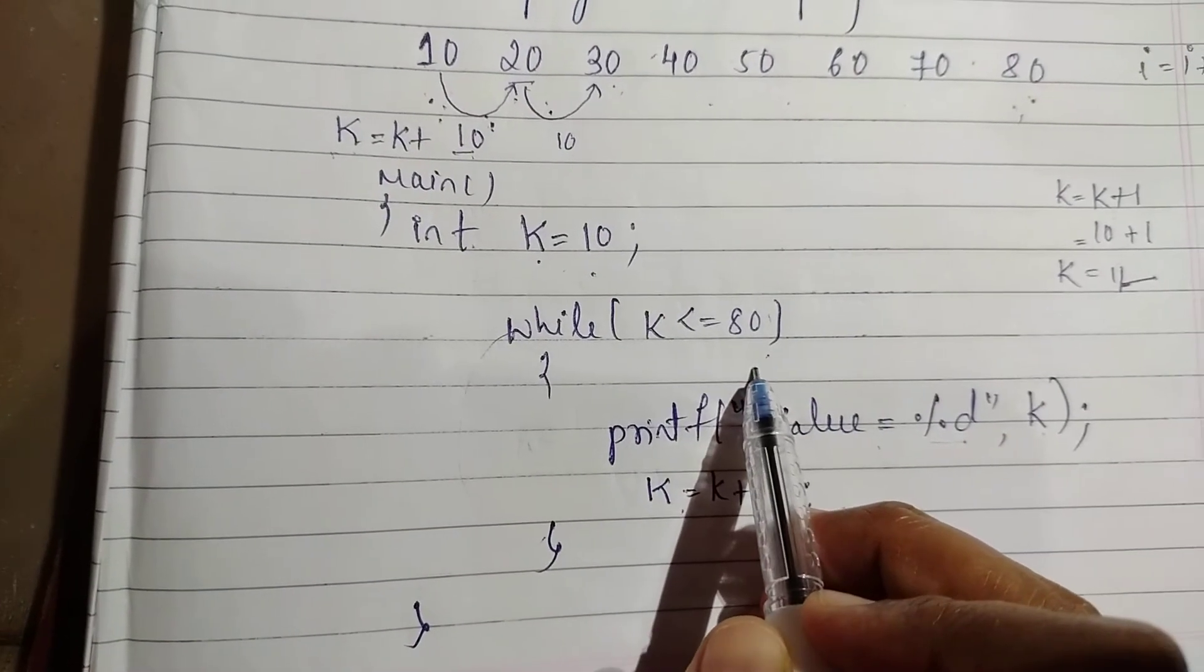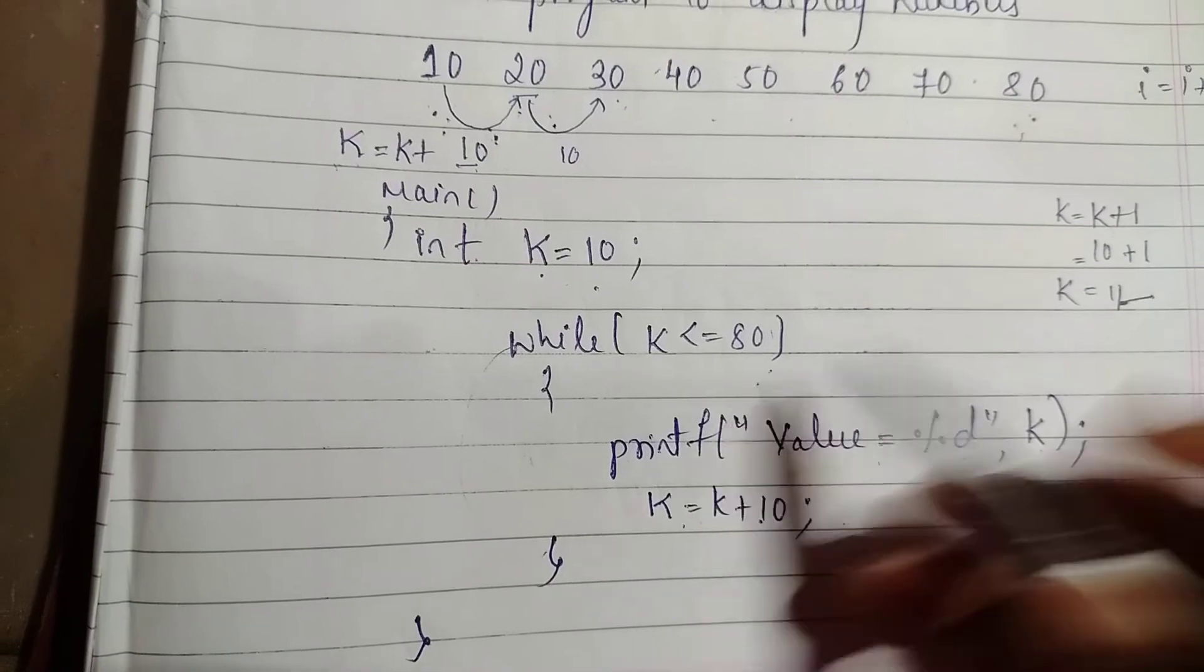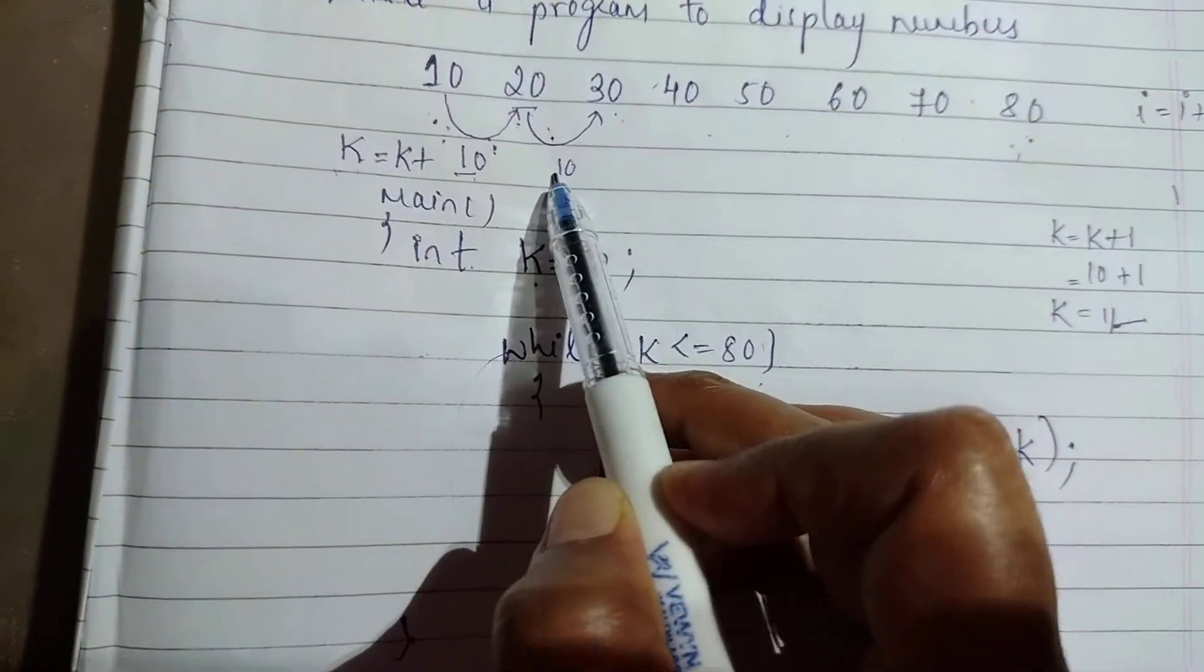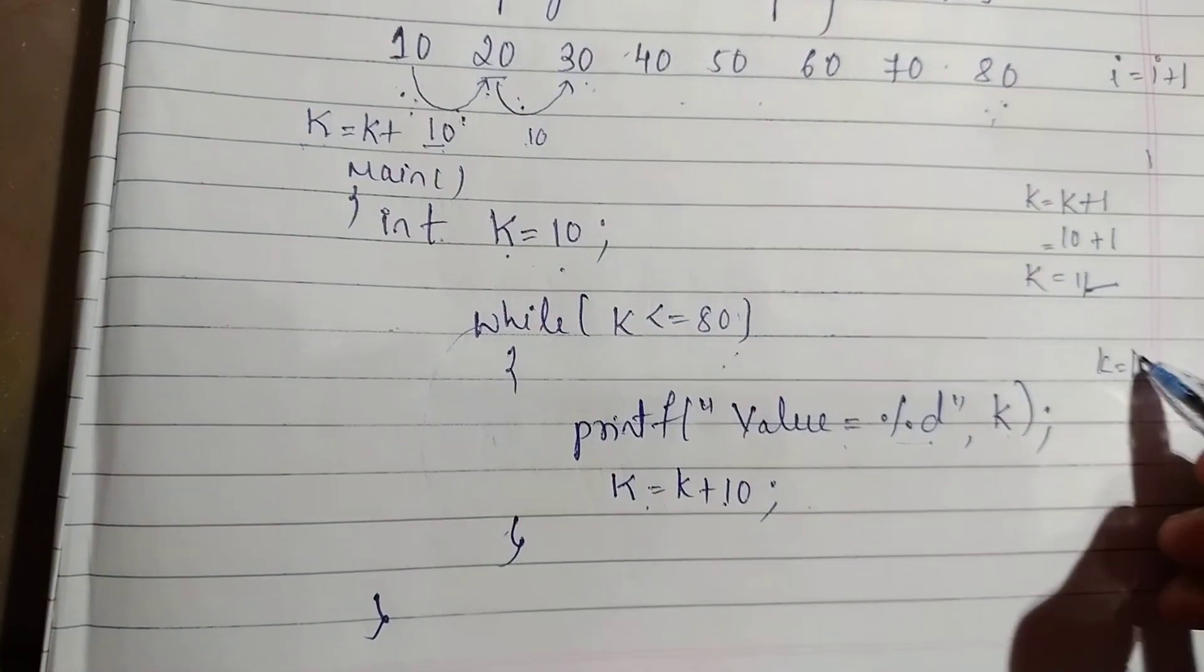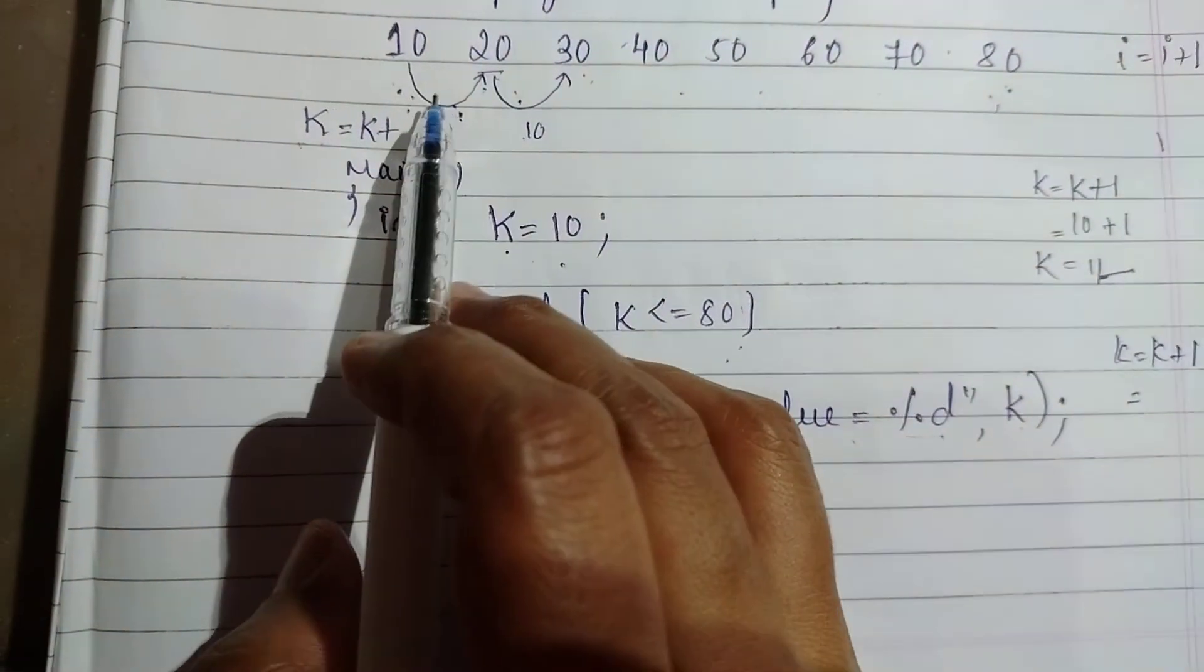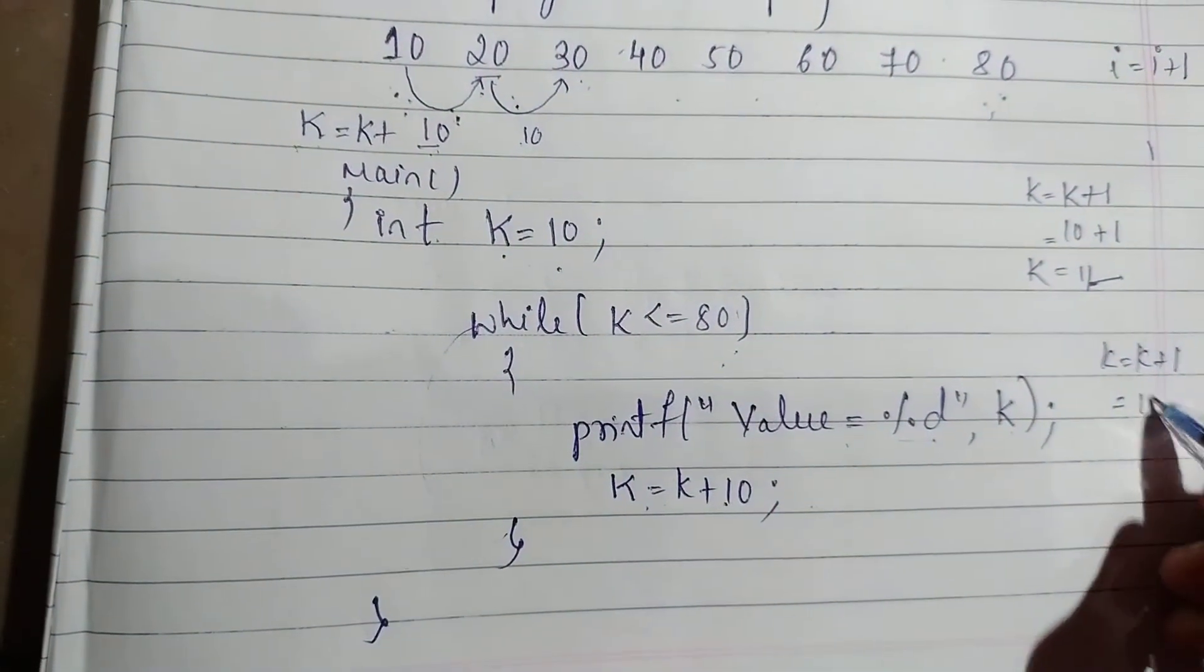Now, why do we need to write K = K + 10, why not K = K + 1? It is very simple. The initial value of K is 10. So if I